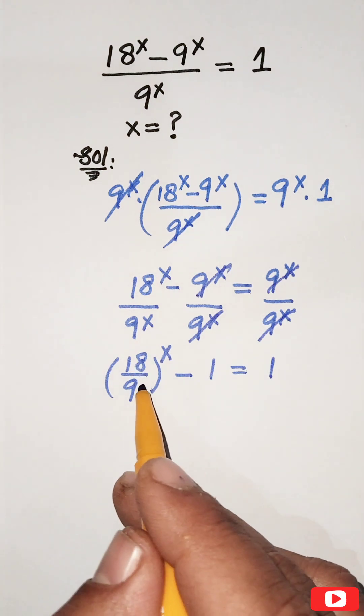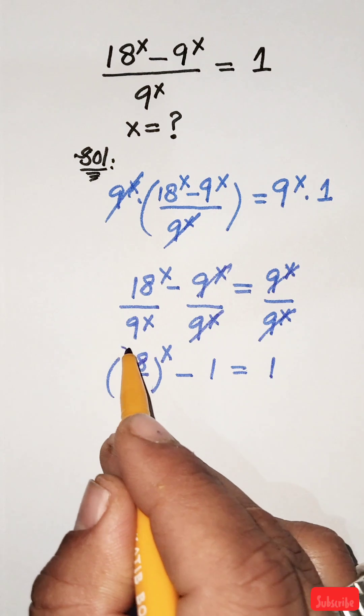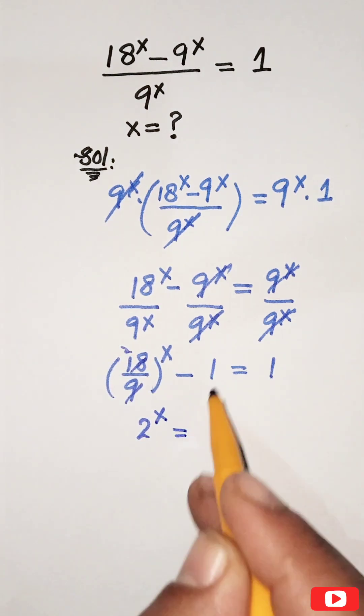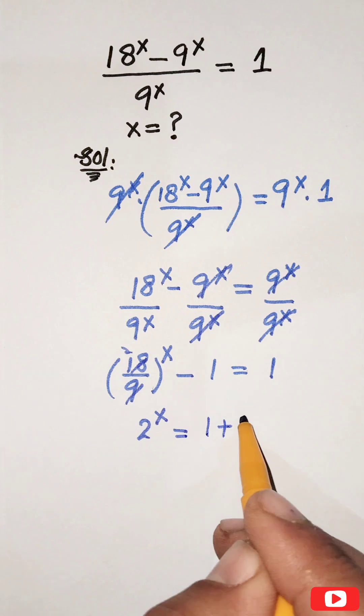18 divided by 9 equals 2 (9 times 2 is 18). So we have 2 to the power x, and minus 1 goes to the right-hand side to become plus 1.